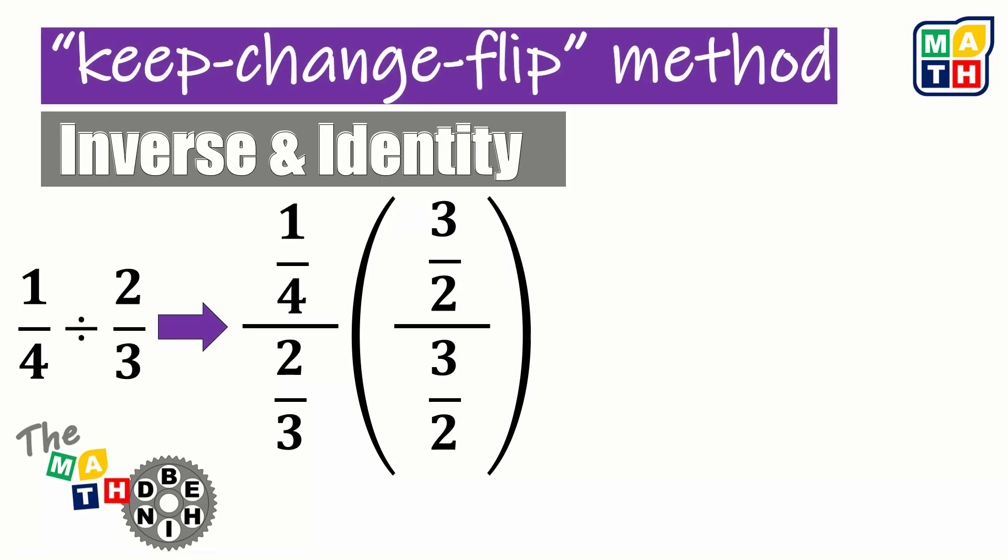3 halves divided by 3 halves is just 1, so we are just multiplying 1 to the given expression and not changing its value. Do not simplify this yet since our goal is just to show that the math behind the keep change flip method is the inverse and the identity property for multiplication.